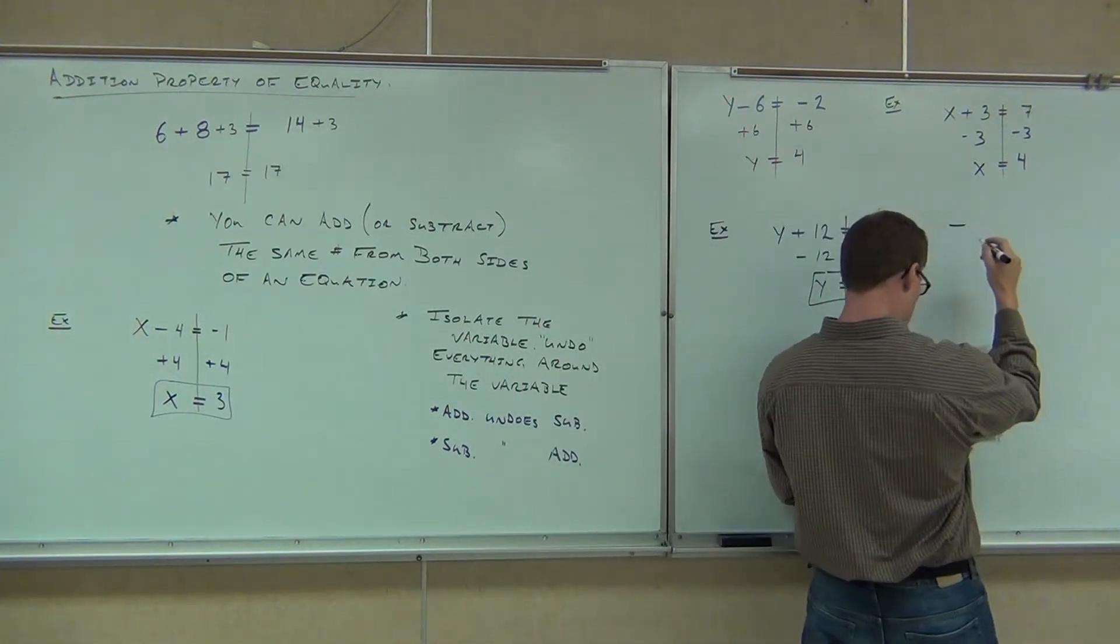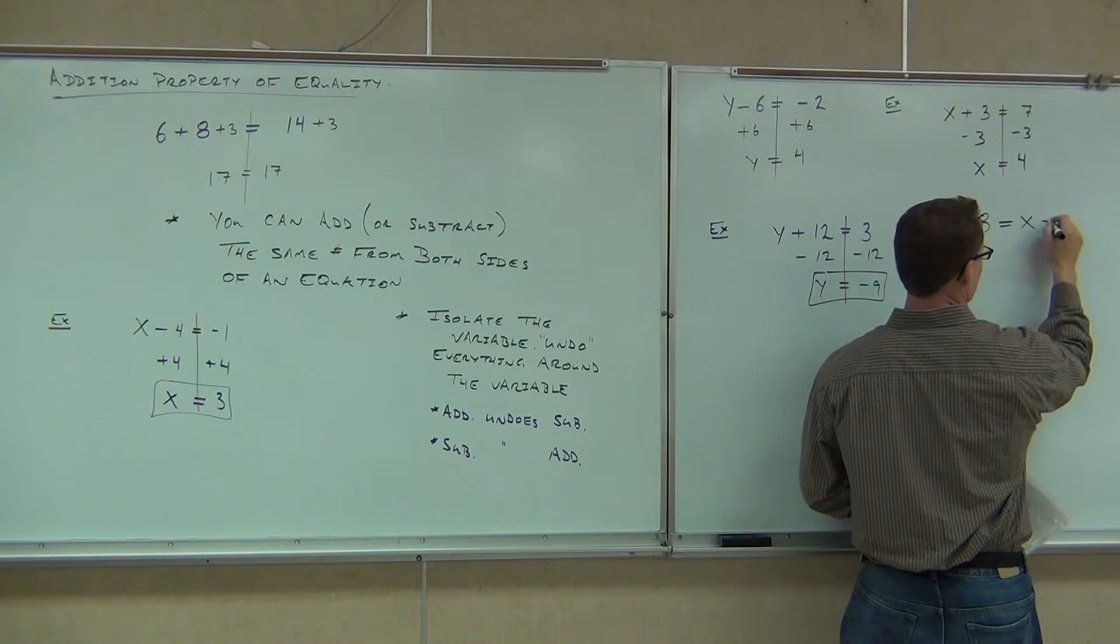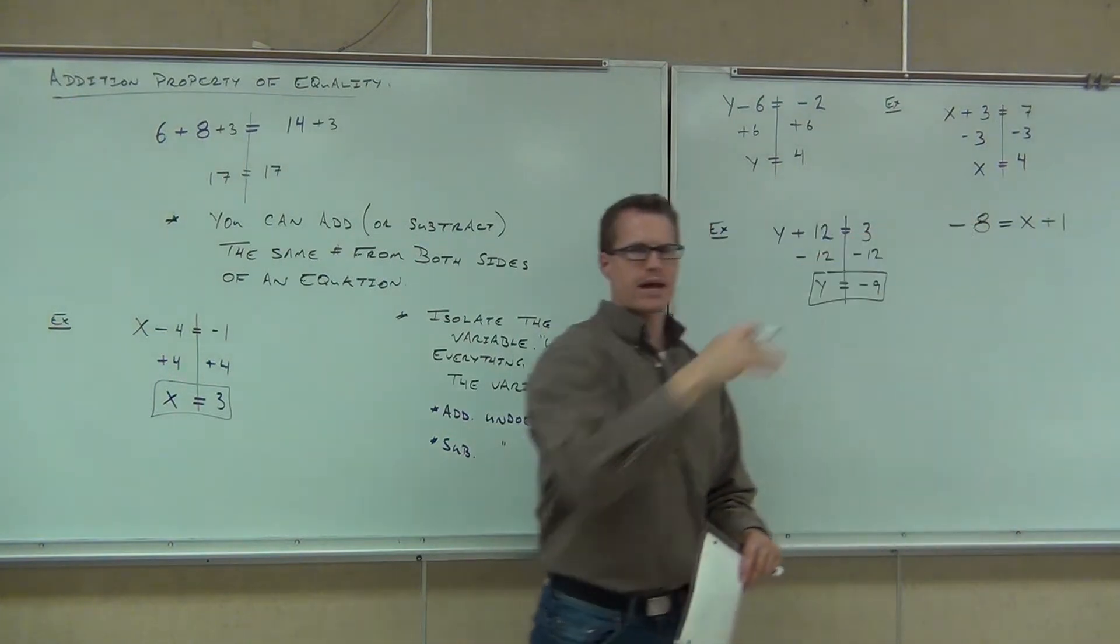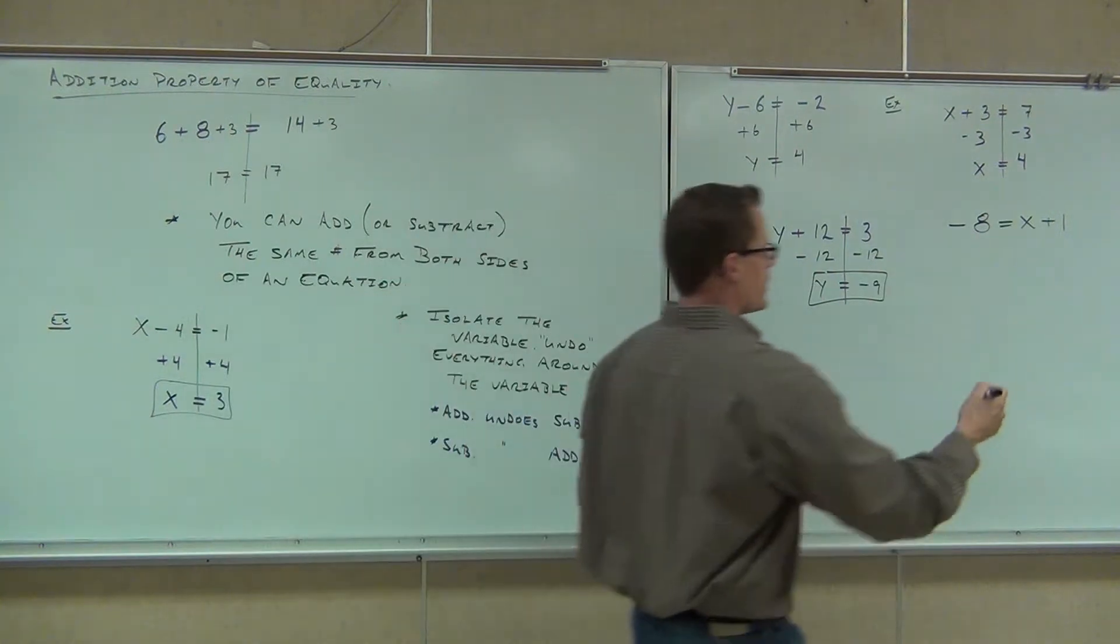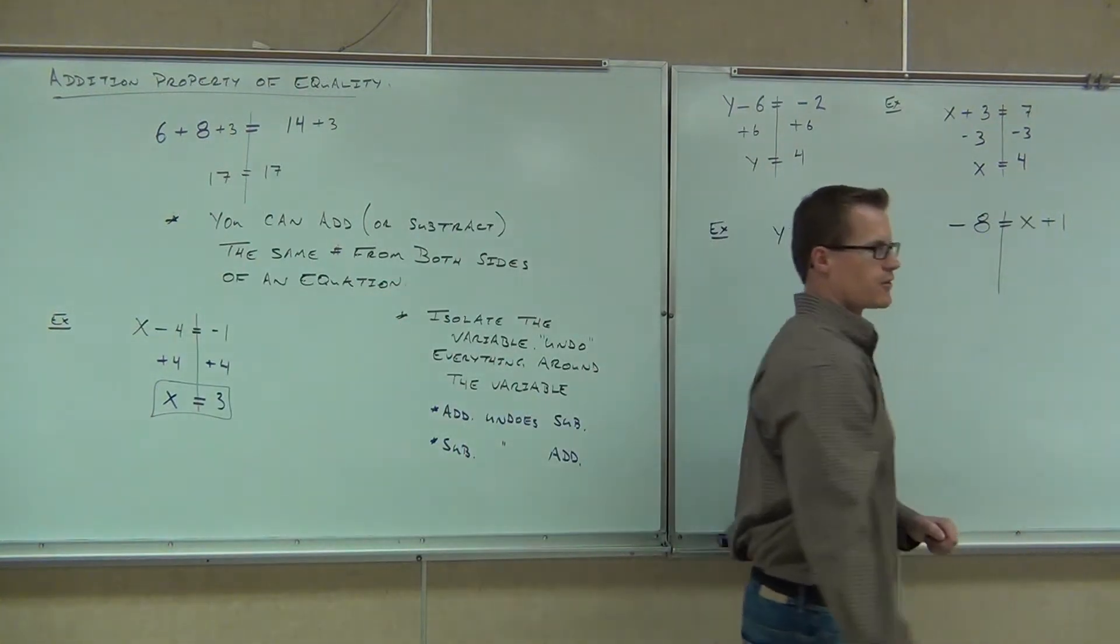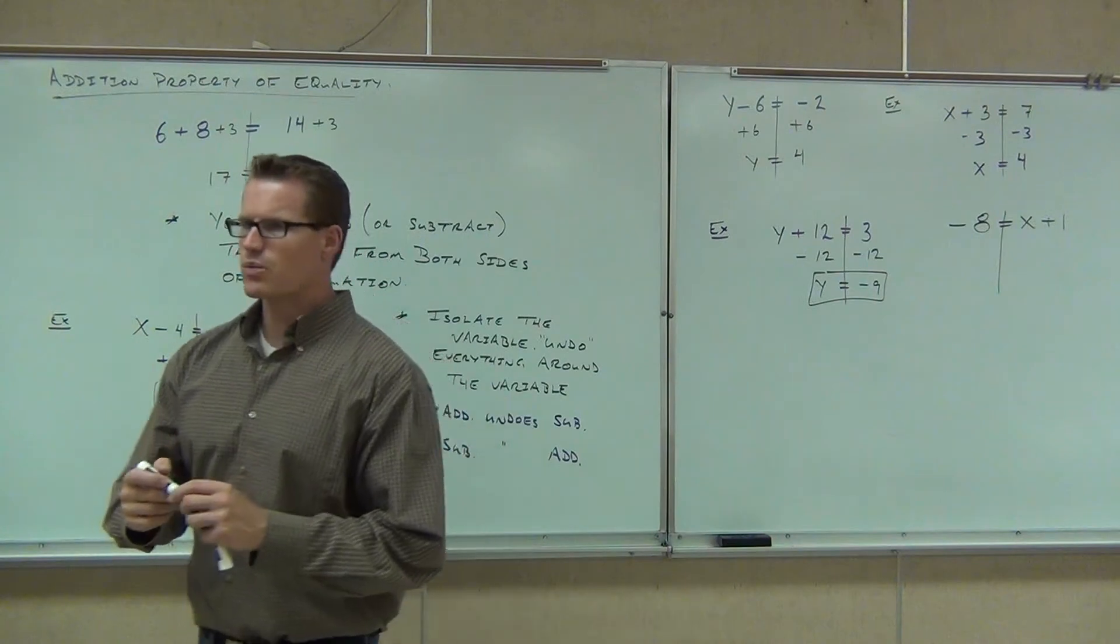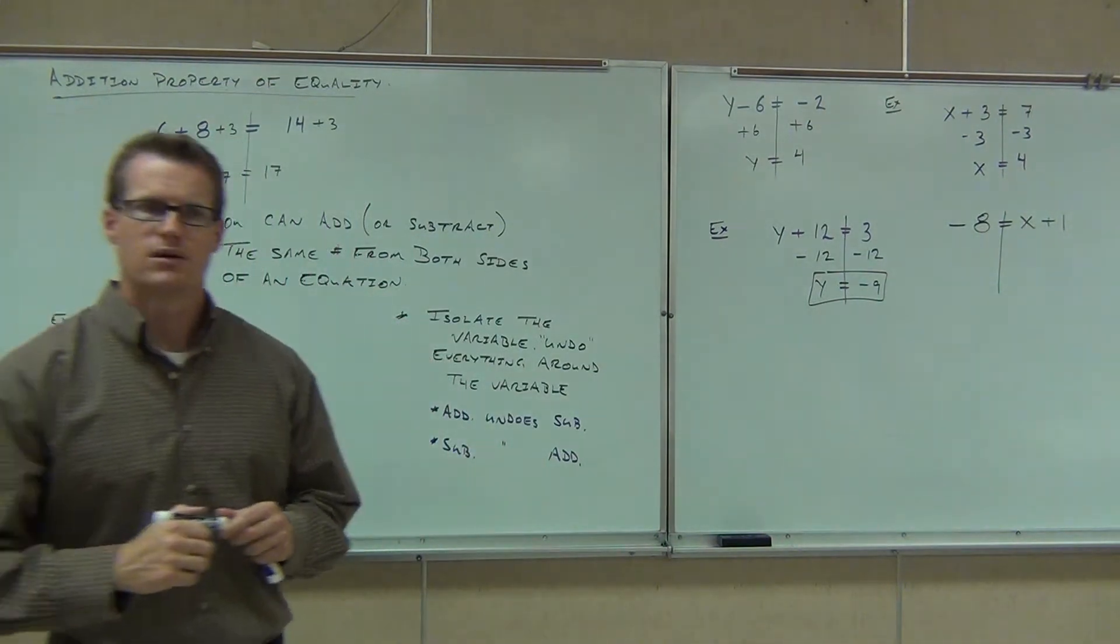Hey, is it still going to work if I have an equation that looks kind of backwards, where I have a variable on the right-hand side rather than the left-hand side? Is that okay? Yes. Okay, it's still an equation, right? So we still have this line. I still have a variable. What's my variable? X. And what do I need to get rid of around the X? One. Yeah.